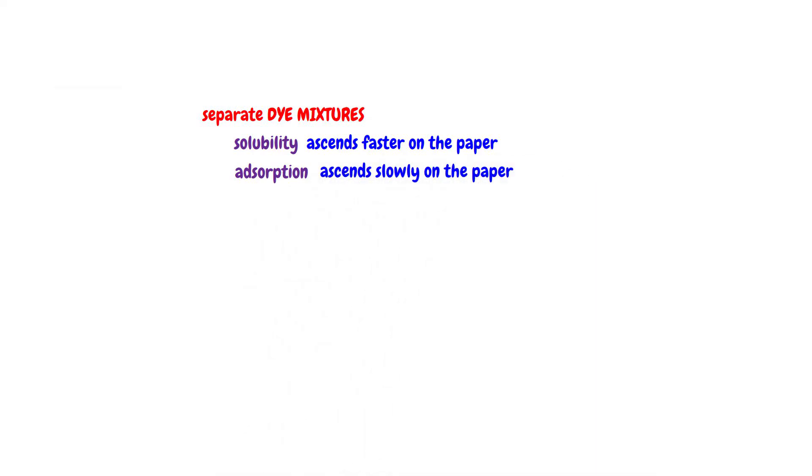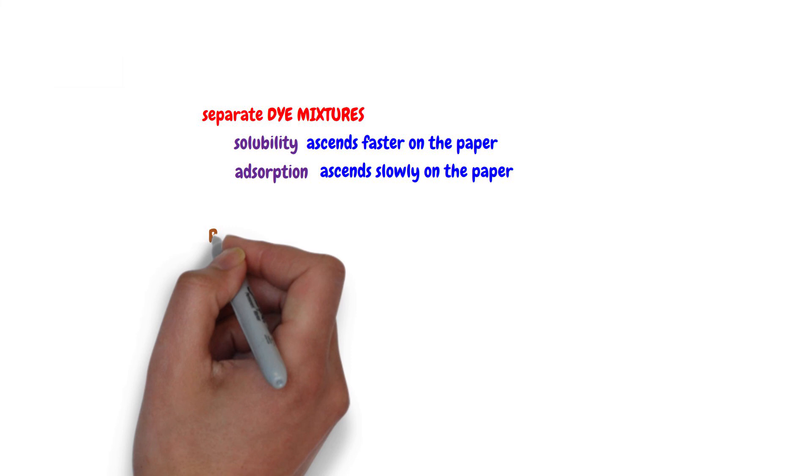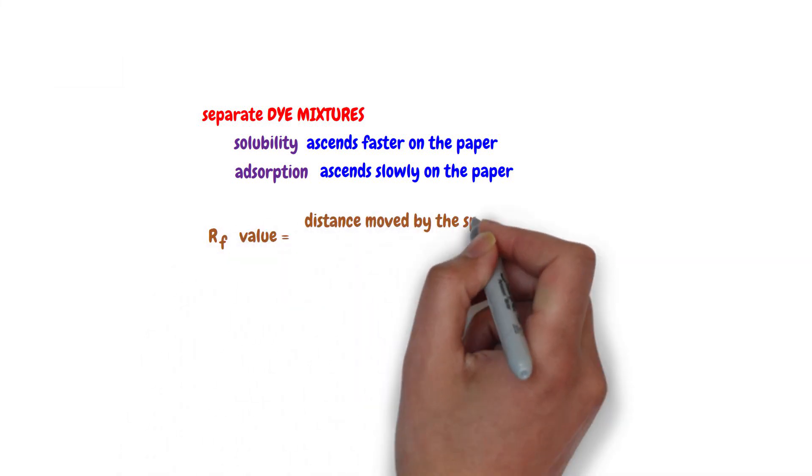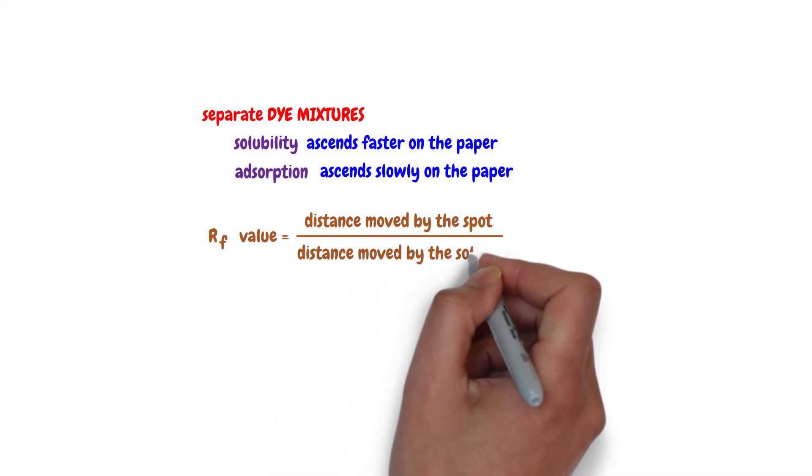The retention factor is the ratio of the distance moved by a spot from the start line to the distance moved by the solvent. The retention factor value is found by dividing the distance moved by the spot over the distance moved by the solvent.